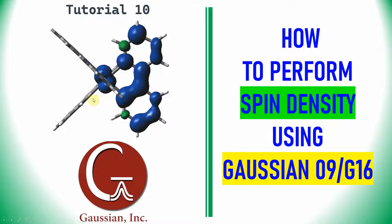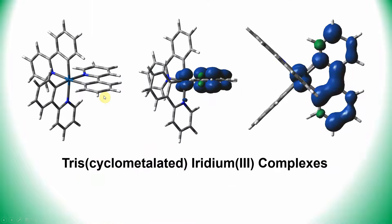This is actually a cyclomethylated iridium(III) complex. This is the optimized geometry of tris-cyclomethylated iridium(III) complex. Here iridium oxidation state is 3+, with 3 neutral nitrogen atoms coordinated to iridium and 3 anionic carbons coordinated to iridium. That means the overall charge of this system is 0. This is the calculated spin density of the iridium complex.